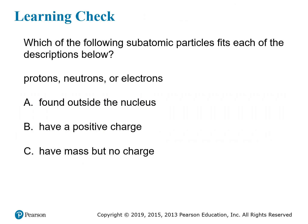Based on these descriptions: the particles found outside the nucleus are electrons; the particles that have a positive charge are protons; and the particles that have mass but no charge are neutrons.